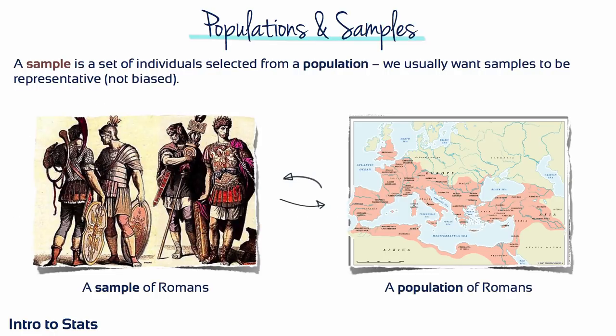Populations are typically very large, and it's usually impossible for a researcher to examine every individual. It's also far too expensive and it would take too long. Instead, researchers select a smaller, more manageable group from the population and focus their studies on these individuals.